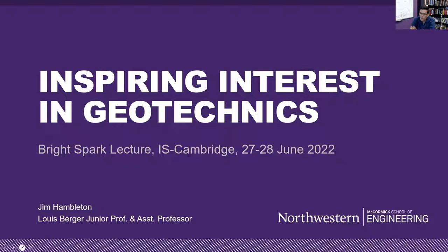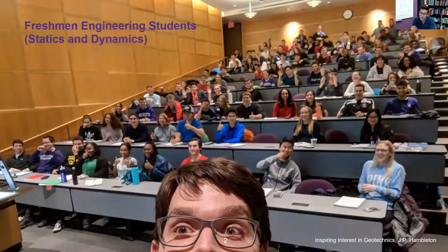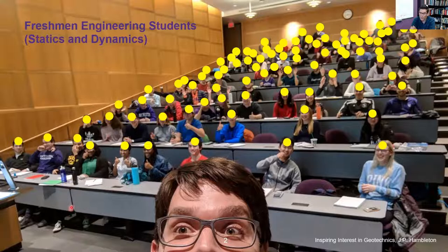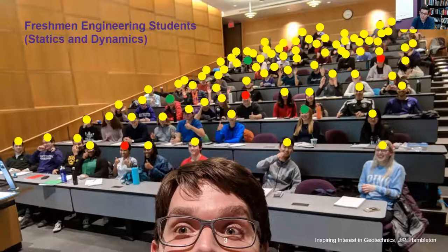To drive that point home—the need for inspiring people to be interested in this subject—I'll show this image of freshman engineering students at Northwestern University. We have a rule at Northwestern that we can't have classes of more than about 100 students, and we have five sections of this required class on statics and dynamics. So you have about 100 students here, 100 brains, and I've colored those with yellow dots—100 people mostly who have made up their mind about what discipline of engineering they would like to go into. A reasonable natural number interested in civil and environmental engineering are shown in green and red.